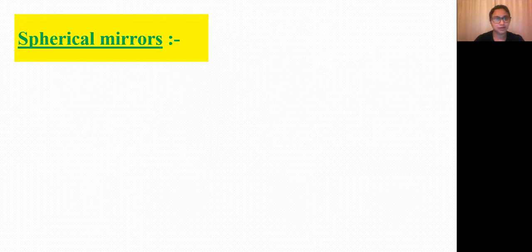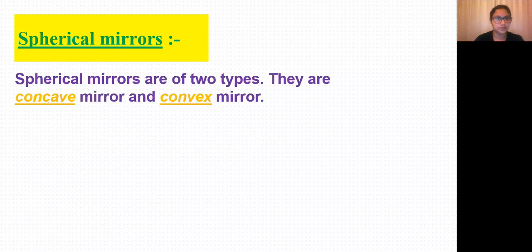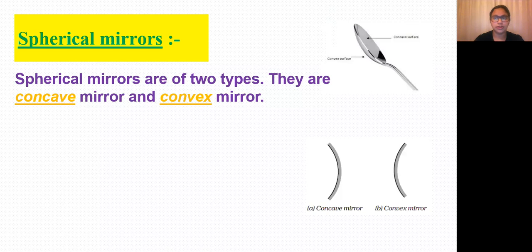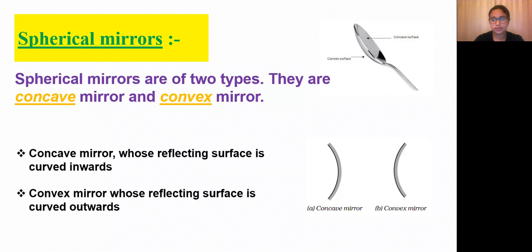We have learned about plane mirrors. Now let us look into spherical mirrors, which are a part of a sphere. There are two types: a concave mirror, whose reflecting surface is curved inwards, and a convex mirror, whose reflecting surface is curved outwards.